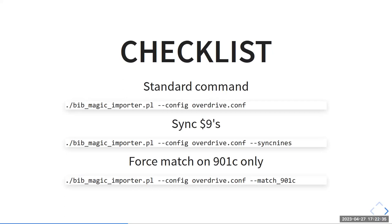This is what the command looks like when you kick off the software. It's pretty simple, trying to be as easy as possible. You execute the script and feed it a config file, and that's it. Dot slash bibmagic_importer.pl, config, overdrive.conf, or whatever — the file name might be the name of the library or system or whatever you want.